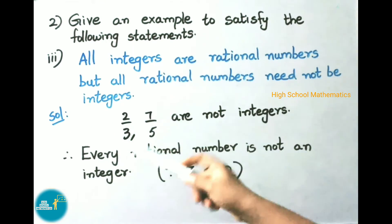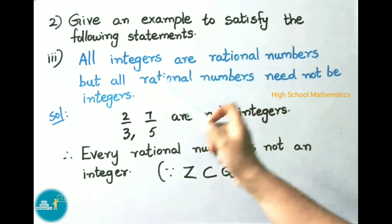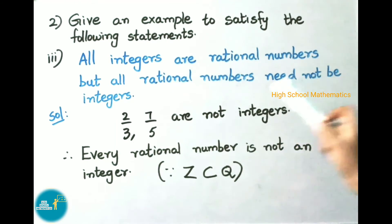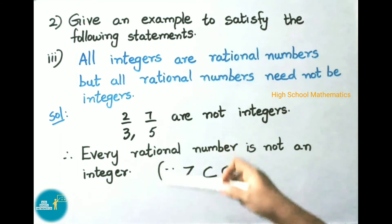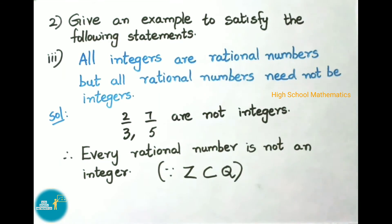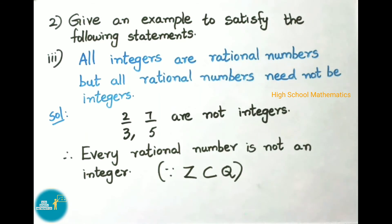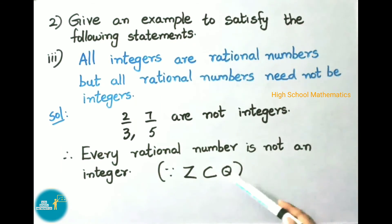Third: all integers are rational numbers, but all rational numbers may not be integers. We know integers consist of all positive numbers and negative numbers, so all integers are rational numbers. But all rational numbers may not be integers, because 2/3, 7/5, etc. are all rational numbers but they are not integers. Therefore all integers are rational numbers but all rational numbers may not be integers, since all integers are a subset of rational numbers.